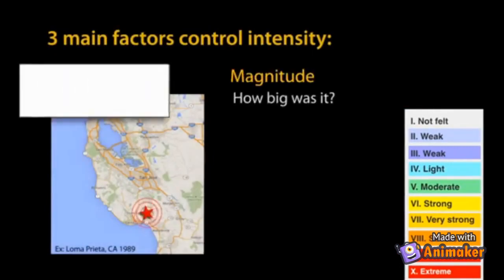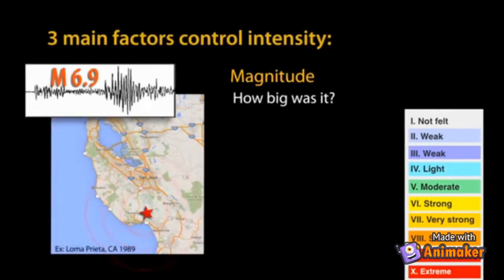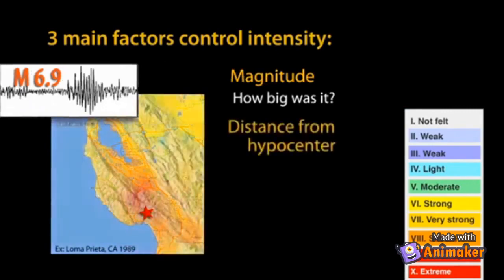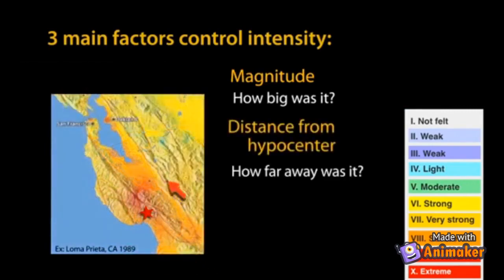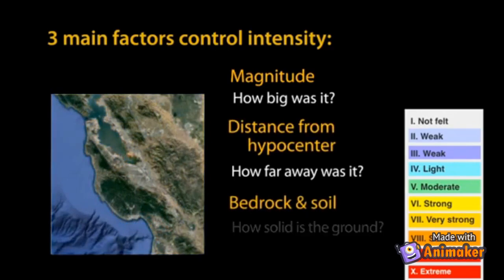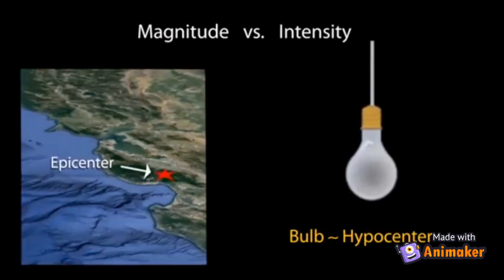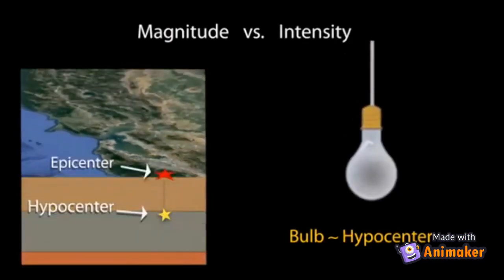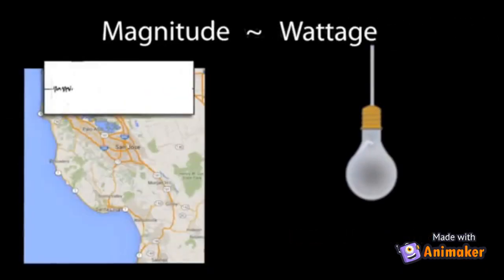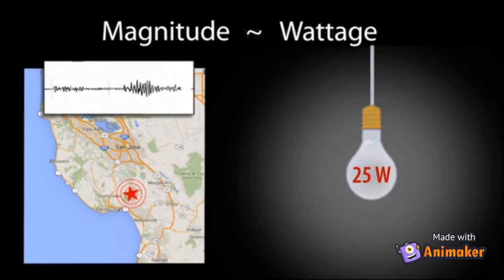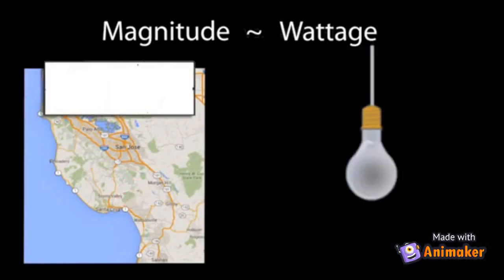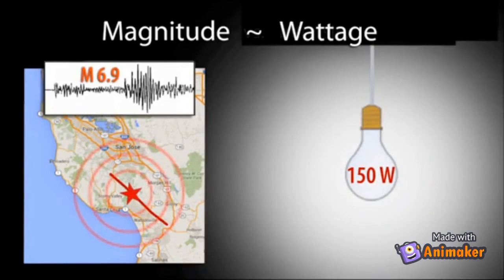Intensity is mostly controlled by three factors: magnitude (how big the earthquake was), distance from the hypocenter (intensity varies from place to place), and the local rock and soil conditions. Let's compare magnitude and intensity by using a lightbulb as an analogy. The lightbulb represents the location within the Earth called the hypocenter, where the earthquake begins. The magnitude, or size, of an earthquake is like the wattage of a lightbulb — just as the wattage represents the amount of power of the lightbulb, the magnitude is related to the total amount of energy released by the earthquake source.